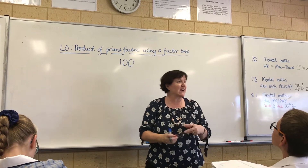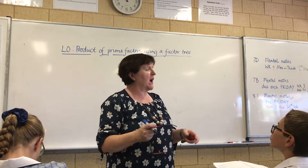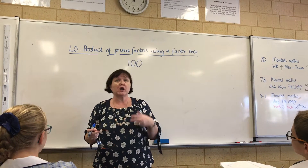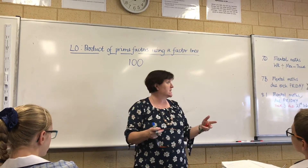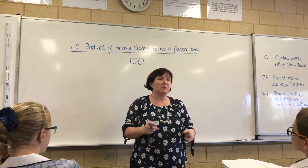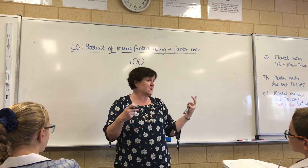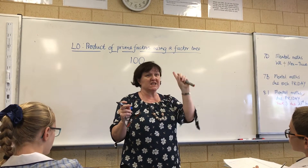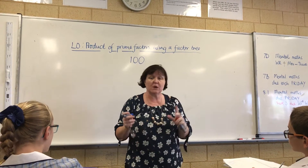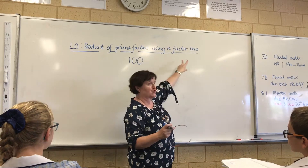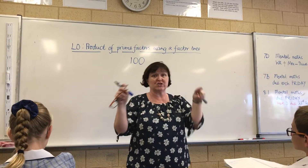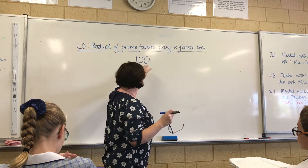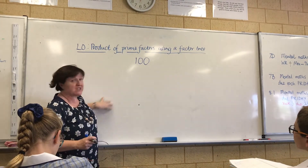I could write all the factors of 100 down but it would take quite a long time, so this way is much easier. You also find the prime factors using this. What we do is use what's called a factor tree. It's called a tree because it has branches, and the branches go in this direction and in this direction.